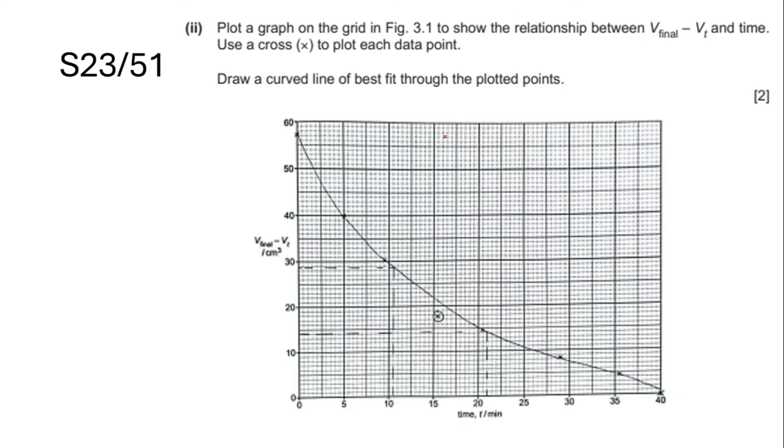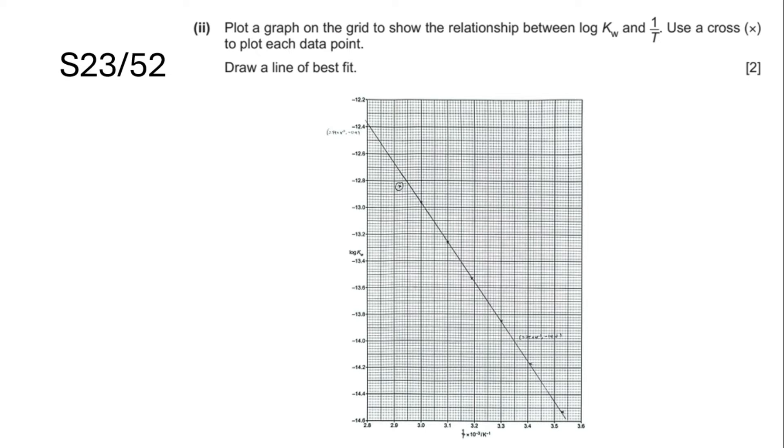In winter 23, the question says draw a smooth curve of best fit. So this is obviously telling us that we have to draw a curve line. In summer 23, another question says draw a curve line of best fit. Then in another paper in summer 23 says a line of best fit, so it turns out to be a straight line. Let's hope this trend will continue that when they say a line of best fit means a straight line, a curved line of best fit means a curved line.